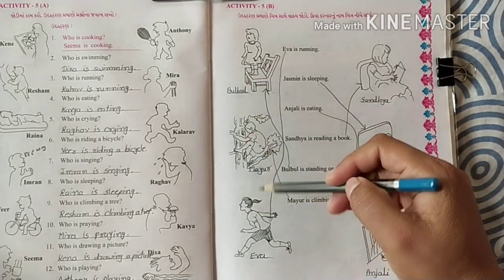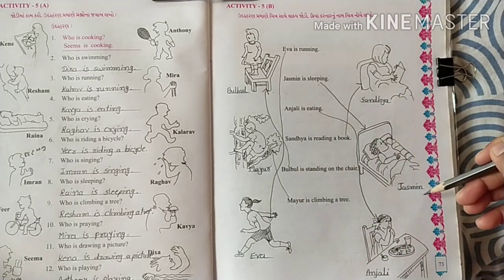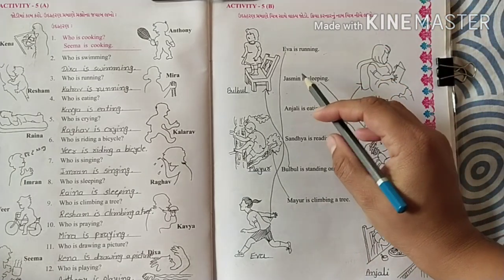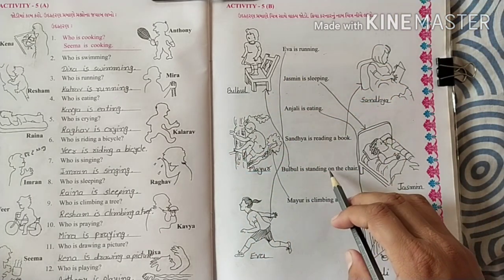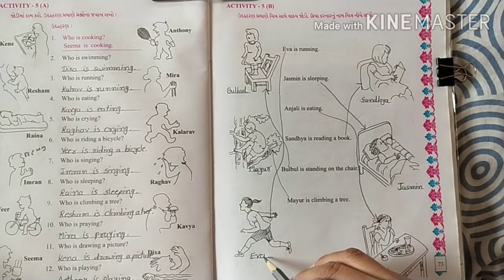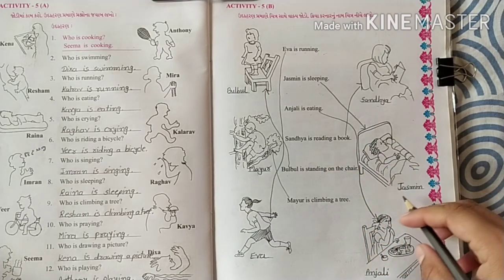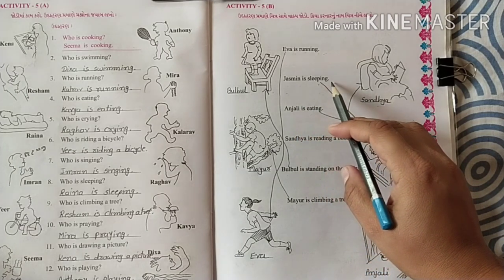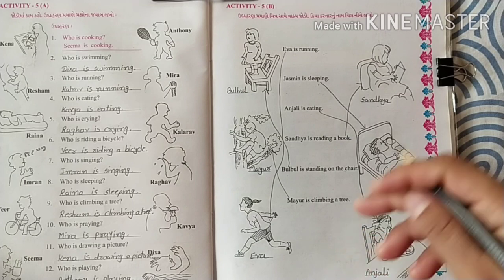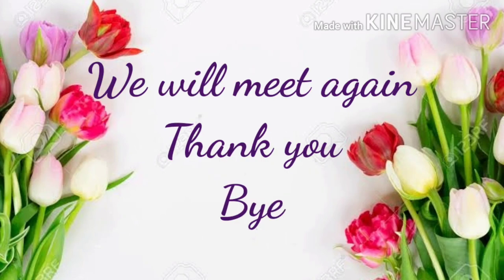Here we have written the names of each person below their picture: Bulbul, Mayur, Iva, Sandhya, Jasmine, Anjali. Now let's read these sentences once more. Bulbul is standing on the chair. Mayur is climbing a tree. Eva is running. Sandhya is reading a book. Jasmine is sleeping. Anjali is eating. Did everyone understand? Anjali is eating.